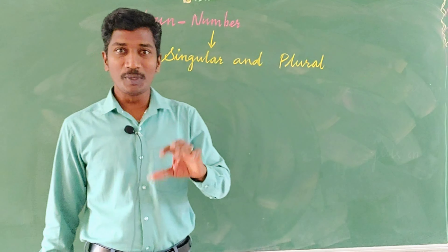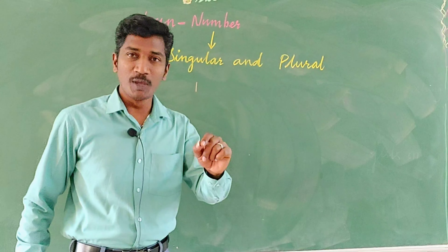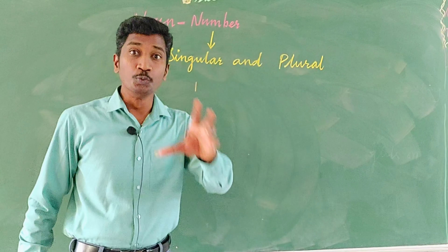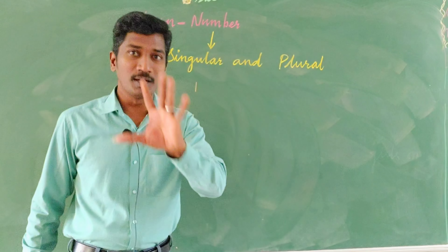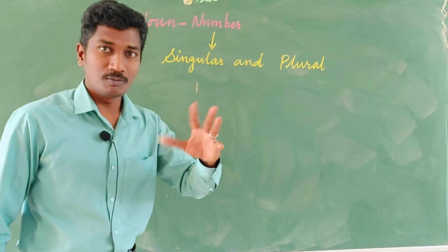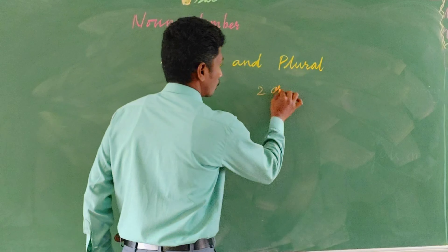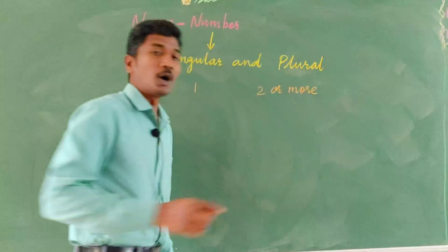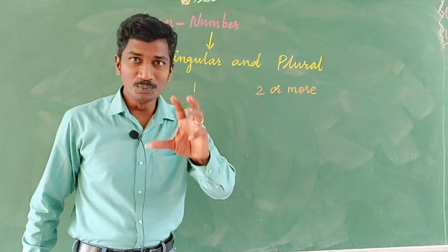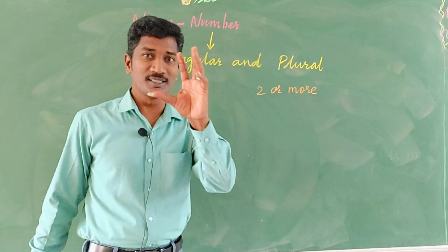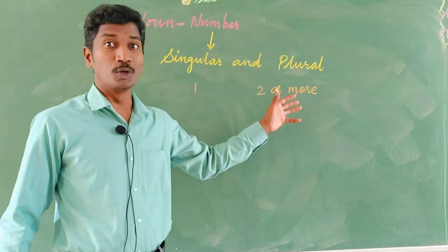Singular is nothing but when you talk about only one — it may be one pen or one group. It talks about singular, that is only one. More than one, even from two onwards, two or more are called plurals. It is a very simple and easy concept: singular is only one, more than one is plural.